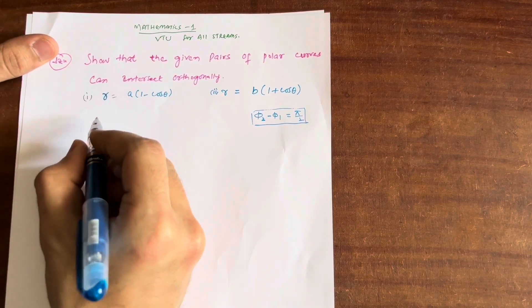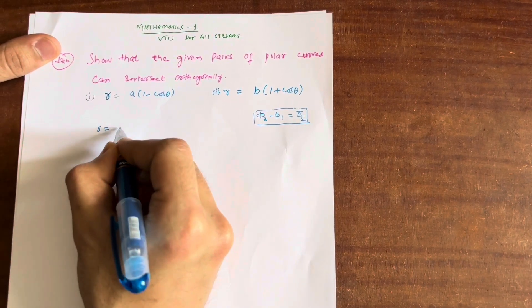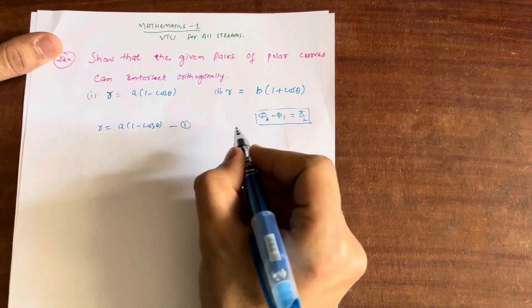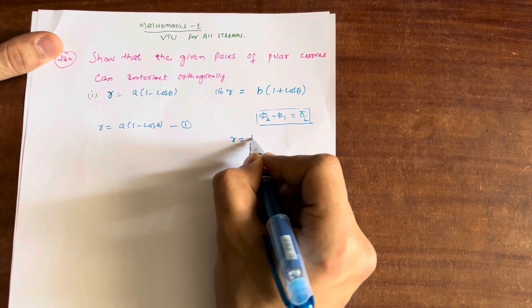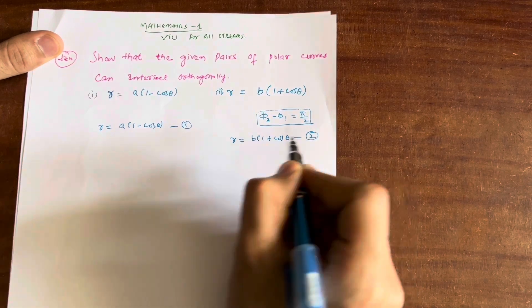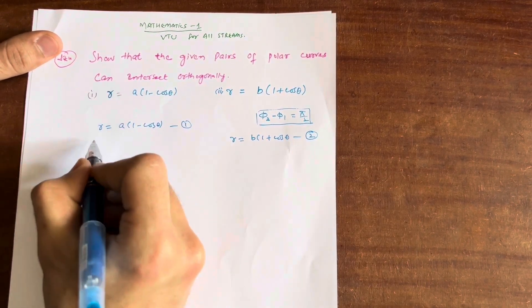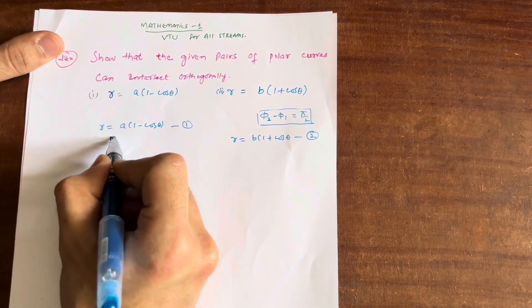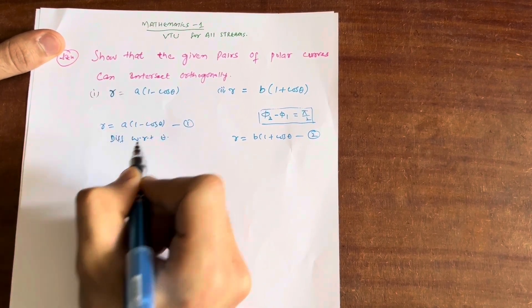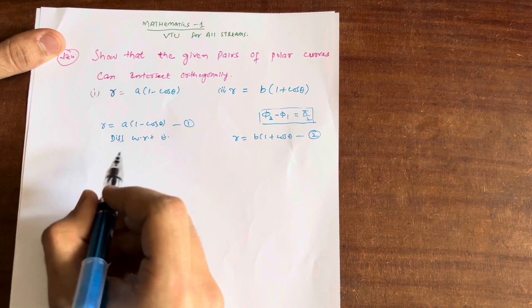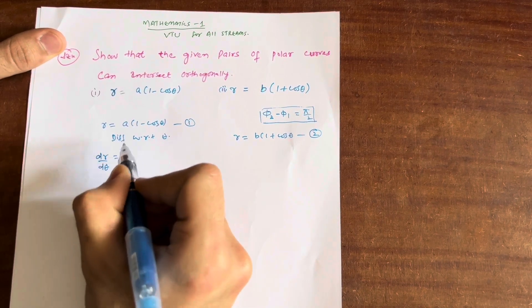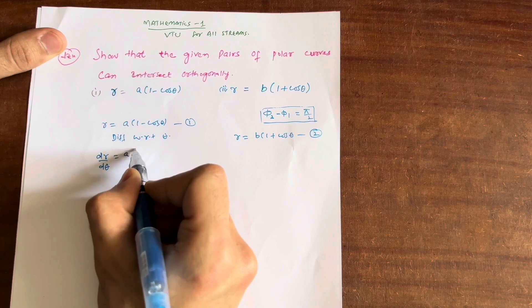Let us call these equations as first and second. R equals A into (1 minus cos θ) is the first equation, and R equals B into (1 plus cos θ) is the second equation. First of all, let us differentiate the first equation with respect to θ. What is the differentiation of R with respect to θ? I can write down dr/dθ: A is a constant, so it stays as is.